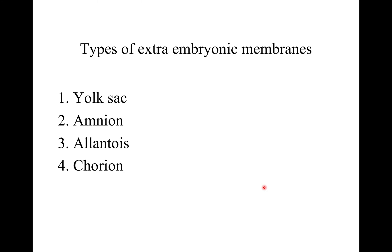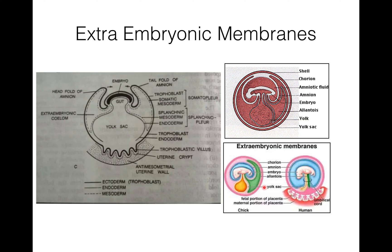The four extra embryonic membranes are yolk sac, amnion, allantois, and chorion. The yolk sac is formed of splanchnopleure and is well developed in reptiles, birds, and prototheria which have polylecithal eggs. Its main function is digestion and it is also regarded as an extra embryonic gut. In human beings it is vestigial.